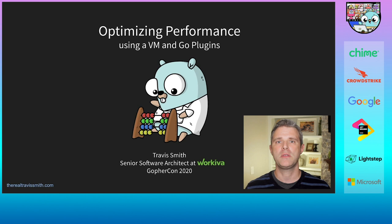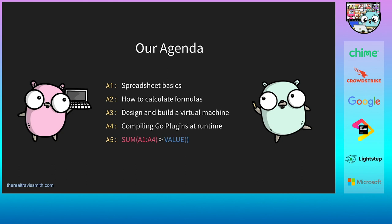Hey, welcome everybody. I'm really excited to be a presenter this year at GopherCon 2020. Last year was my first GopherCon, and San Diego sure did not disappoint. My name is Travis Smith, and I'm a Senior Software Architect at Workiva in Ames, Iowa. I work primarily on data frameworks and calculation systems. Today I'd like to share my experience of building a spreadsheet calculation engine and some of the tricks I've tried along the way to improve performance.